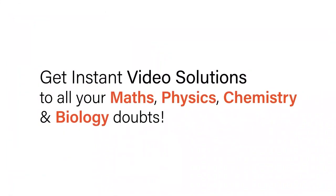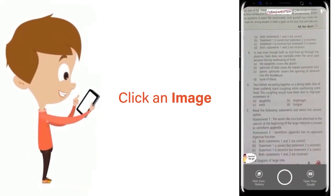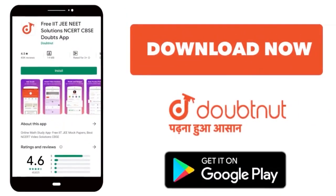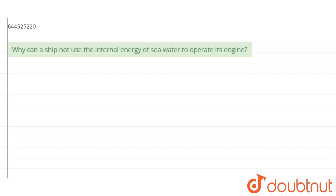With Doubtnut, get instant video solutions to all your maths, physics, chemistry, and biology doubts. Just click the image of the question, crop the question, and get instant video solution. Download Doubtnut app today. Hello everyone, so the question is on the screen right now and the question is, why can a ship not use the internal energy of seawater to operate its engine?